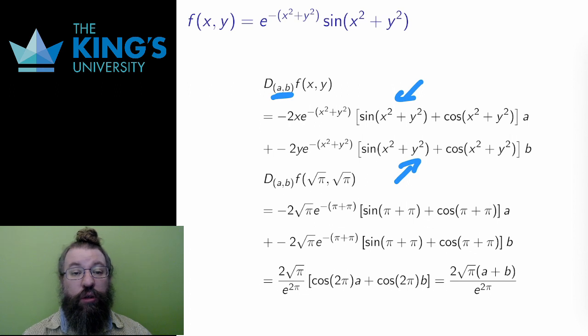Then again, I could look at a specific point, say again √π, √π, just because it's a nice point to calculate for this function. I'm repeating myself, but it bears repeating. This is a derivative at a specific point in some specific direction.